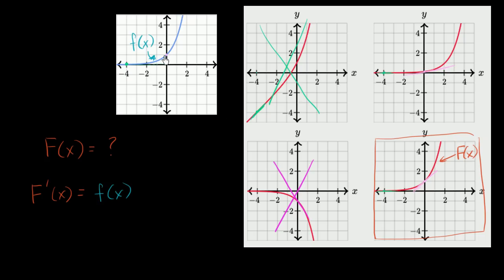You might notice these look very similar to each other — they actually look identical. And you might remember from differentiation that these both look like the basic exponential function. I didn't ask you to figure out the actual function, just what the possible antiderivative would be. Lowercase f is the derivative of capital F, or capital F is an antiderivative of lowercase f. When you inspect this, both of these functions look like e to the x, because the derivative of e to the x is e to the x.